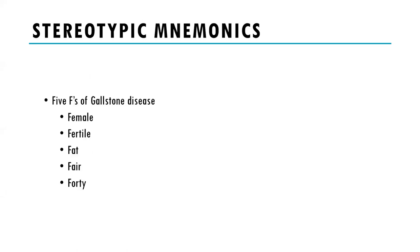The textbooks say it's the classic 5 Fs — female, fertile, fat, fair, and 40. This is not quite true in the modern era because universal diets high in cholesterol have led to a high incidence of gallstone disease. The youngest person I've taken a gallbladder out of was 11 years old, weighing 78 kilograms, and the oldest was 91. Obesity is one of the major factors.